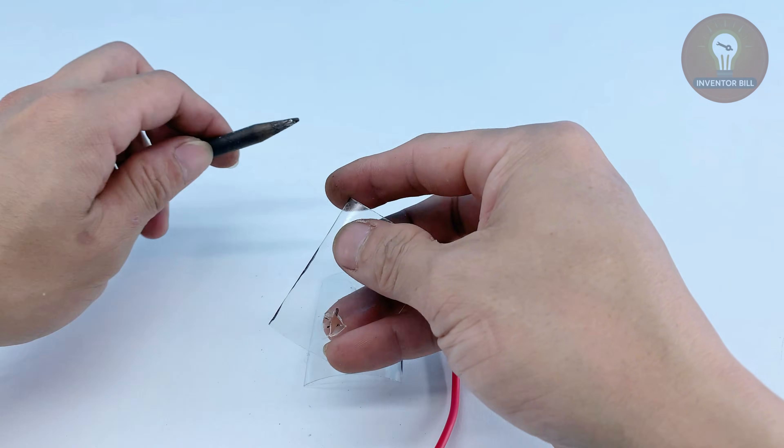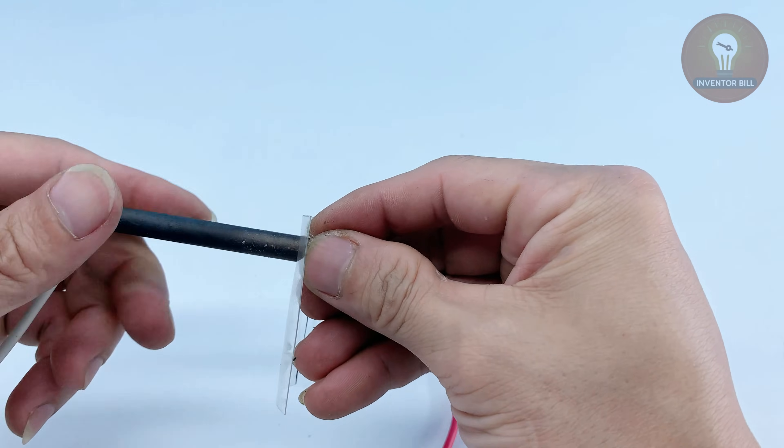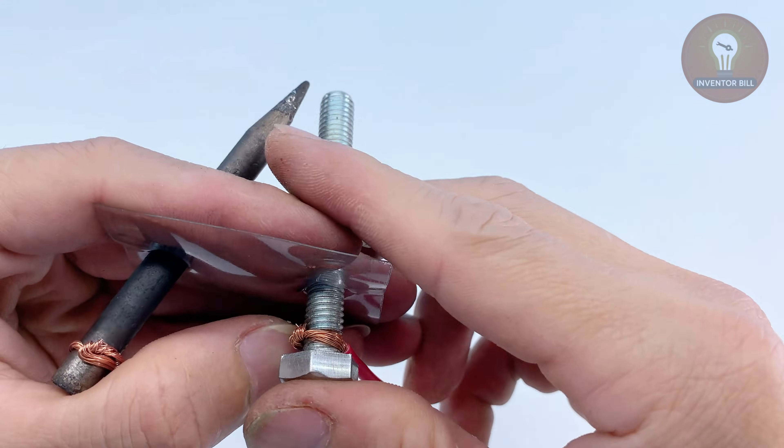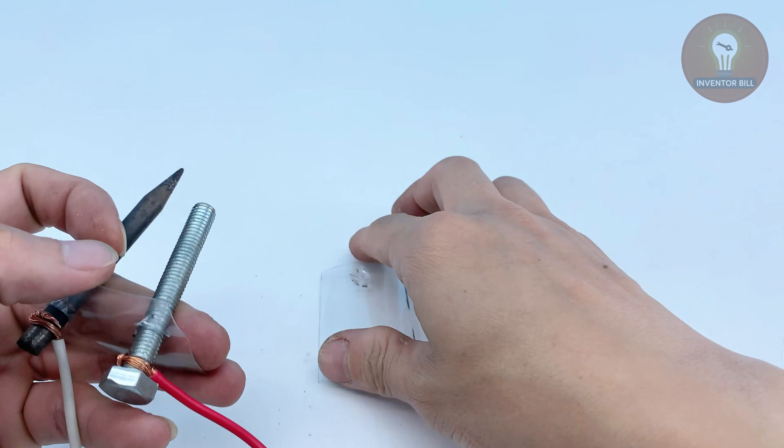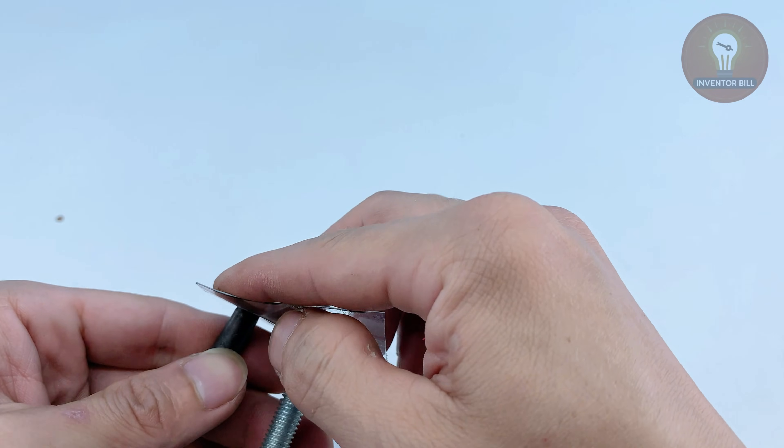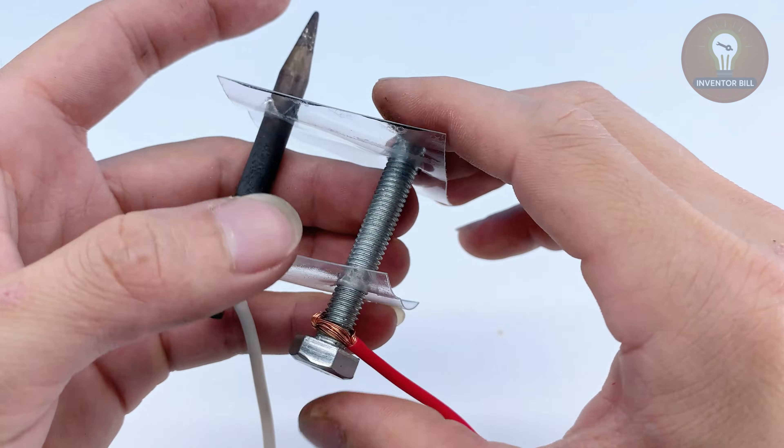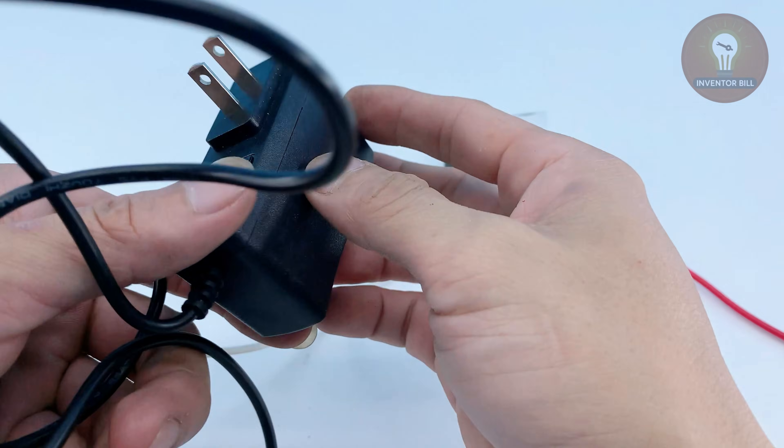Next, slide both the soldering tip and the screw through the two plastic pieces you prepared earlier. Make sure they're parallel but not touching each other. Keeping a small gap between them is very important. This setup will let the electric current flow through the salt water later, cleaning the surface of your soldering tip safely.